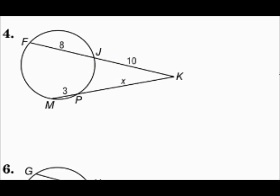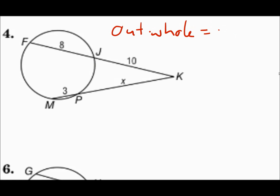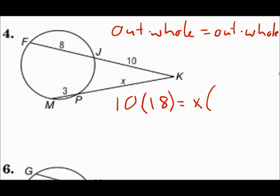On number 4, we have two secants, so we do outside times the whole thing equals outside times the whole thing. On the top secant, the outside part is 10 and the whole thing is 10 plus 8, or 18. That equals the other secant: the outside part is X, and the whole secant is X plus 3. Multiply: 10 times 18 is 180. Distribute on the right: X times X is X², and X times 3 is 3X.